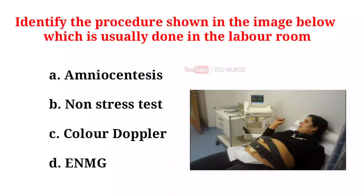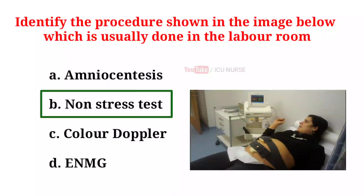Identify the procedure shown in the image below, which is usually done in the labor room. A. Amniocentesis. B. Non-stress test. C. Color Doppler. D. ENMG. And the correct answer is D. Non-stress test.